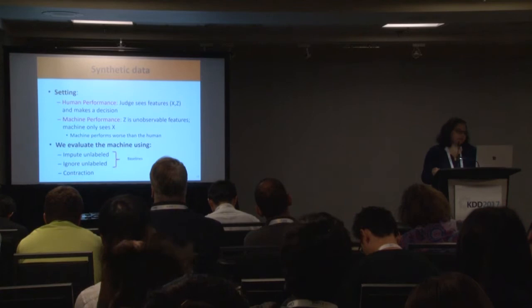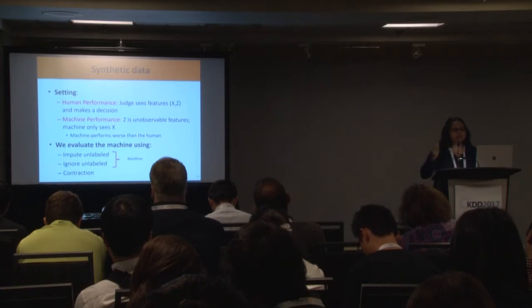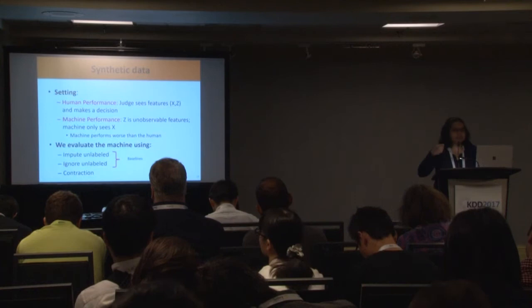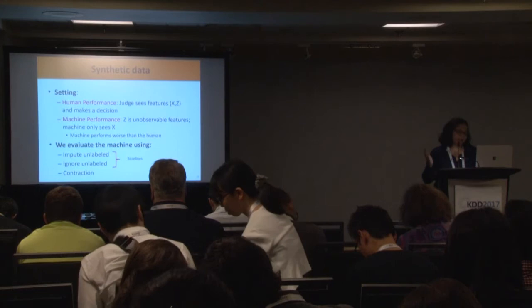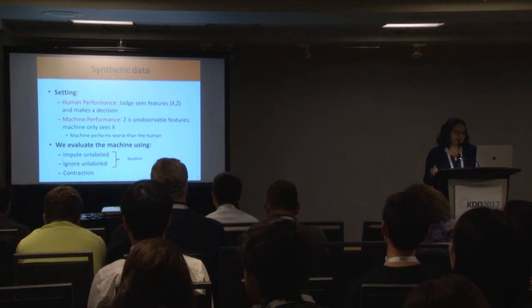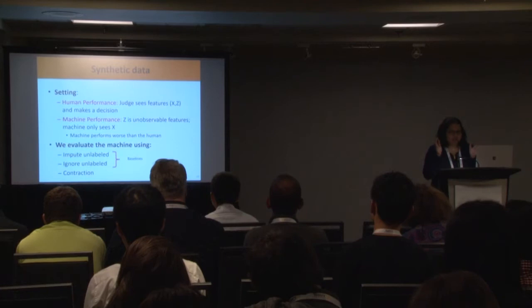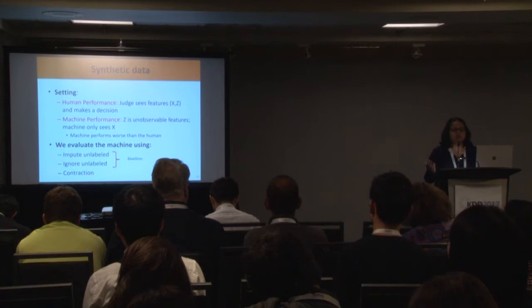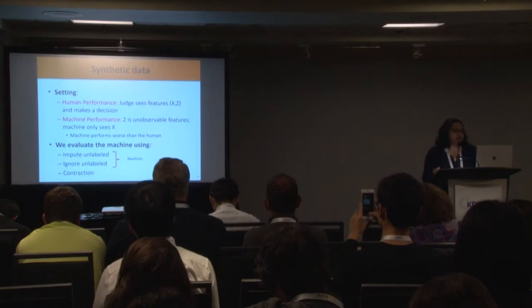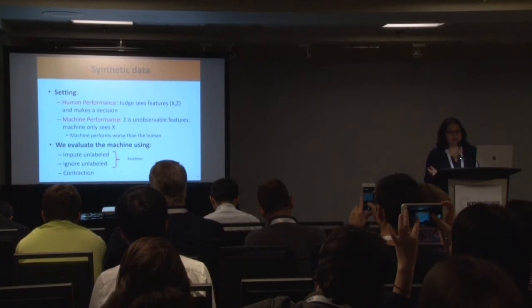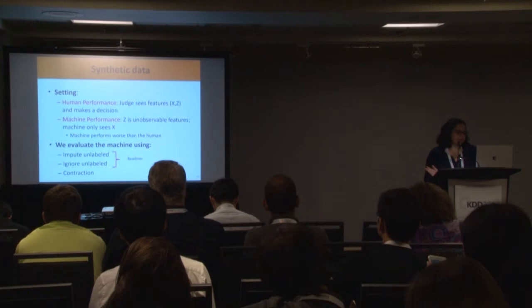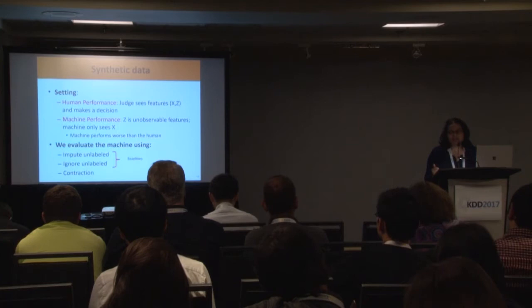In the synthetic data setting, human judges see both observed features — labeled X, also available to the algorithm — and unobservable variables labeled Z, such as defendant body language, and then make a decision. The machine sees only the recorded features and does not have access to unobservables. We set up the synthetic task so that, by construction, the machine is performing worse than the human judges. We are evaluating a logistic regression model using prior approaches — impute unlabeled and ignore unlabeled — and our contraction approach.